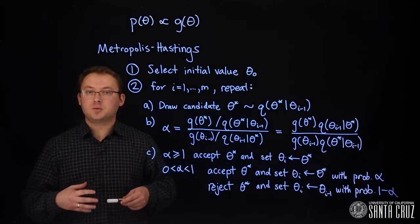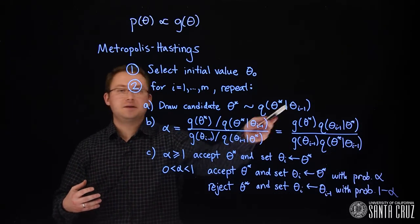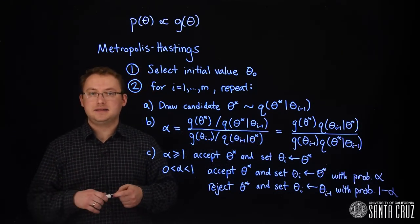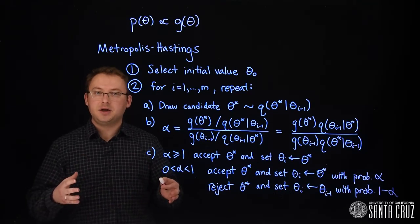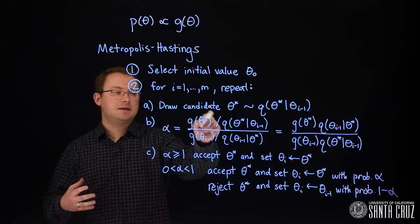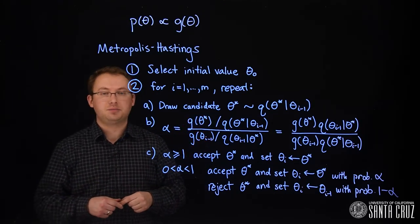So, in random walk Metropolis-Hastings where the candidate is drawn from a normal distribution where the mean is the previous iteration's value, and we use a constant variance in that normal distribution, the acceptance ratio alpha will be really easy. It will just be g evaluated at the candidate divided by g evaluated at the previous iteration.